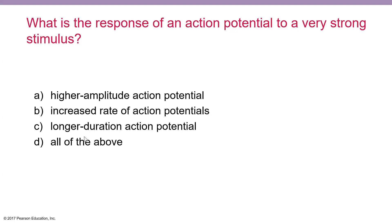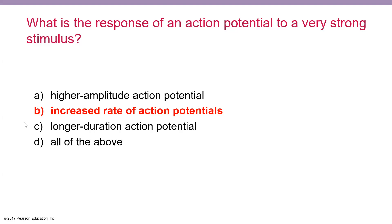They are exact mirrors of each other — same amplitude, always the same duration. So by process of elimination, that excludes A, C, and D. The only thing we can do to send a signal of a stronger stimulus is increase the rate of action potentials — how many are we firing per a given time? This is a trickier question because we didn't actually speak about the frequency of action potentials, but we will coming up.